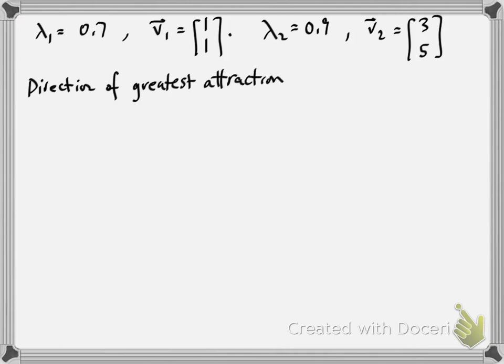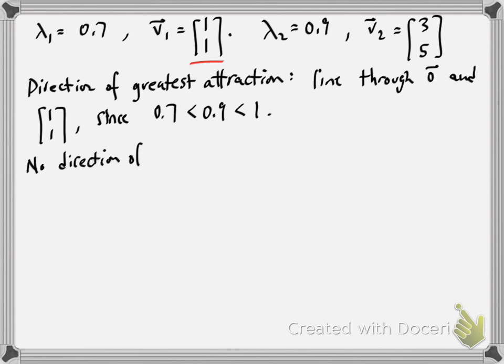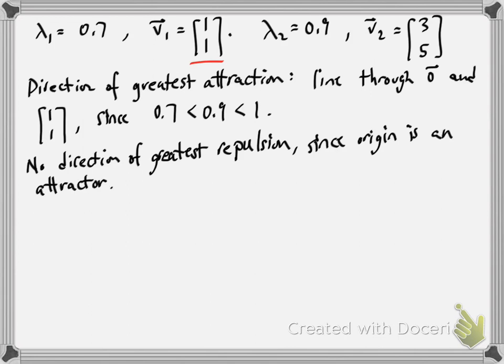So the direction of greatest attraction is going to be the line through the origin and the vector 1, 1. I can see that because 0.7 is the smaller eigenvalue in magnitude. And it's attraction because that value is smaller than 1. There's no direction of greatest repulsion because both of the eigenvalues are less than 1 in magnitude. So the origin is an attractor.